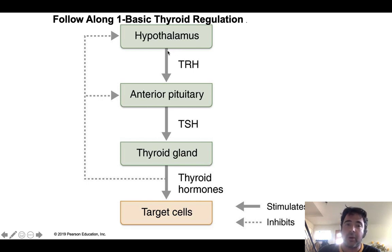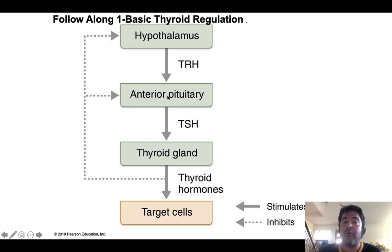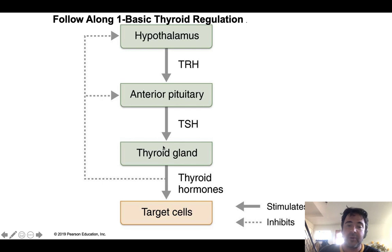That hormone travels through the hypothalamic-hypophysial portal network — portal networks are when one capillary network is connected to another. This tropic hormone binds to cells in the anterior pituitary gland called thyrotrophs, triggering the release of thyroid-stimulating hormone. Thyroid-stimulating hormone is another tropic hormone that travels through the bloodstream to the thyroid gland and binds to receptors on the follicular cells. It's a peptide hormone, and that binding triggers the thyroid gland to produce thyroid hormone.